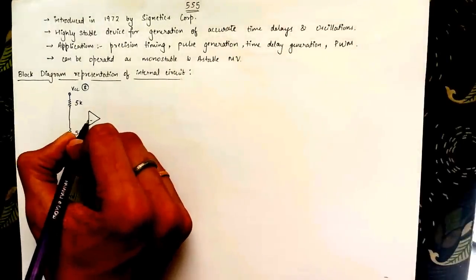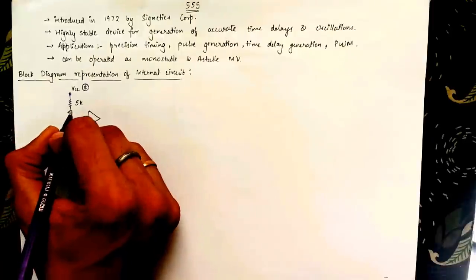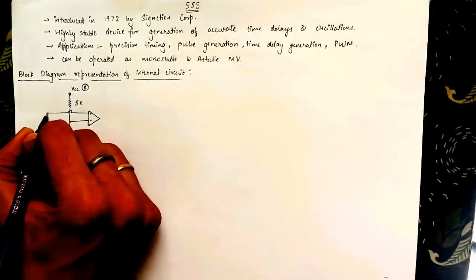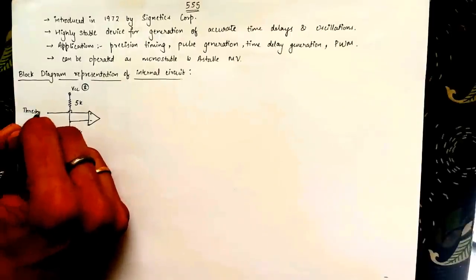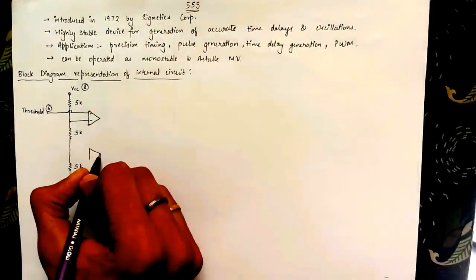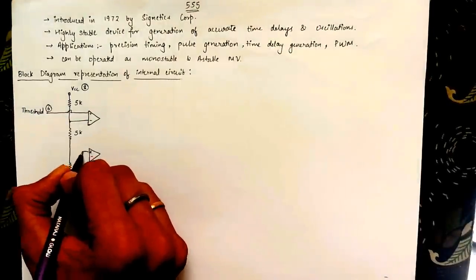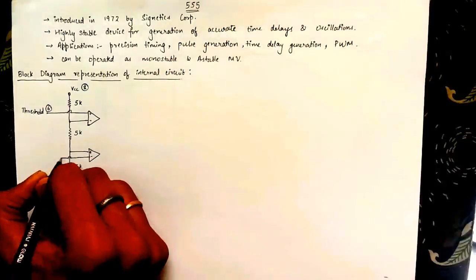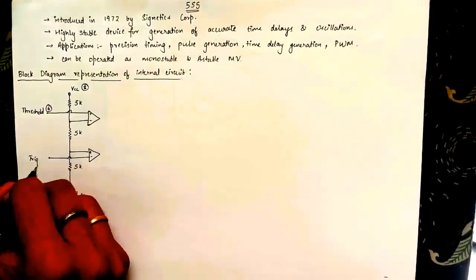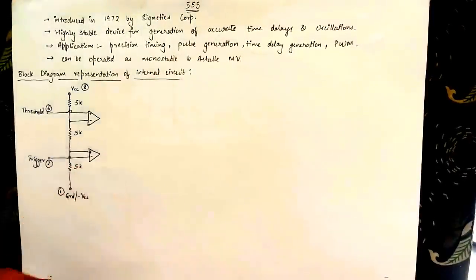Two comparators are connected with the negative of first comparator connected between the two resistors and positive taken out as threshold pin or pin number 6 of the IC. The second comparator's positive pin is connected between the two resistors and the negative pin is taken out as trigger pin or pin number 2 of the IC.